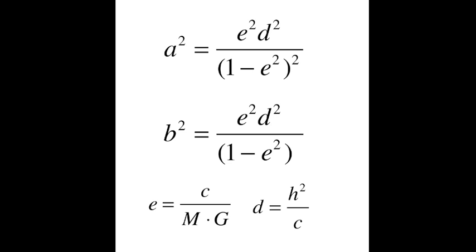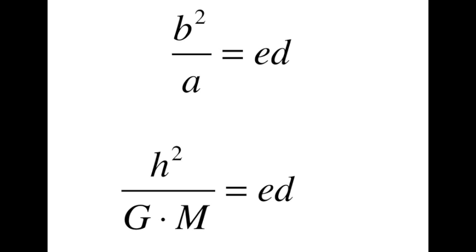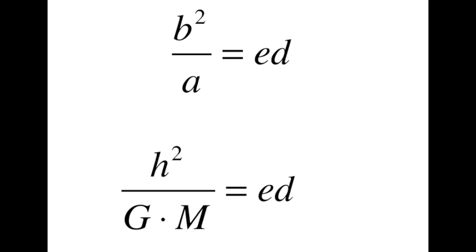where ed is equal to h squared divided by GM, and ed is equal to b squared over a.